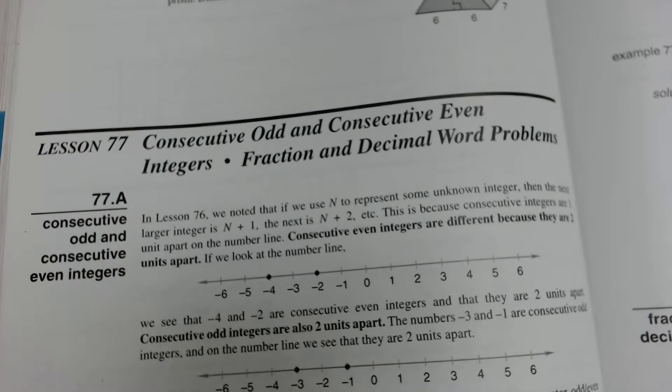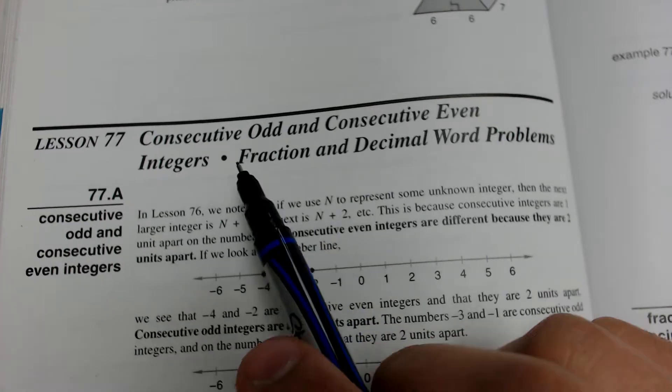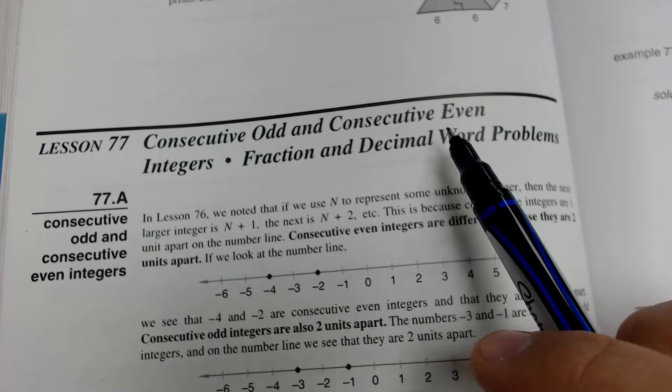Fraction and decimal word problems isn't going to be too difficult for us. Consecutive odd and even integers is a continuation of the previous lesson, where we learned how to find three numbers that follow each other. However, as the name implies, we're looking for consecutive odd and consecutive even integers.